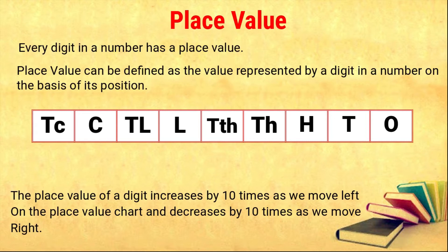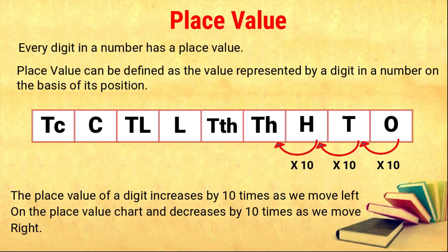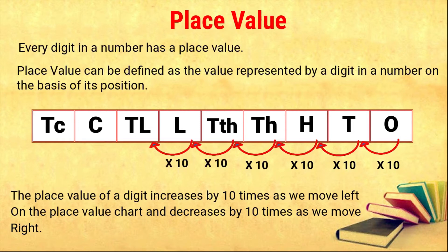As we move from ones place to tens place, it increases by ten. Then tens to hundreds, it increases by ten. Hundreds to thousands, it also increases by ten. Thousands to ten thousands, again increases by ten. Likewise ten thousands to lakhs, lakhs to ten lakhs, ten lakhs to crores, crores to ten crores — it increases by ten times.